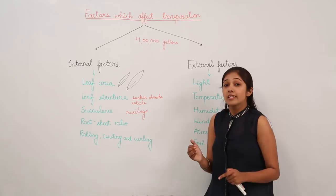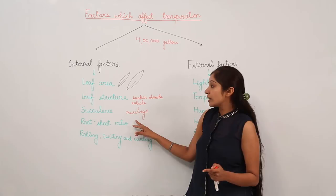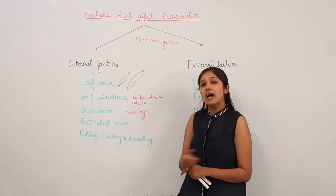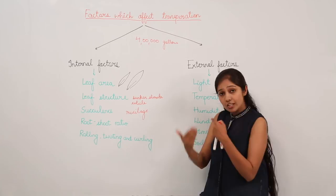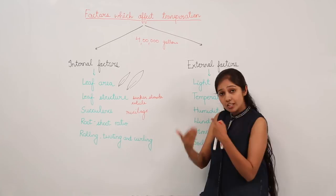Next we move on to root-shoot ratio. If the root-shoot ratio is large, there will be an increased rate of transpiration. If the root-shoot ratio is small, there will be a reduced rate of transpiration. So root-shoot ratio also has a direct influence on the rate of transpiration — more the root-shoot ratio, more the rate of transpiration; lesser the root-shoot ratio, less is the rate of transpiration.